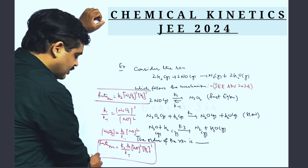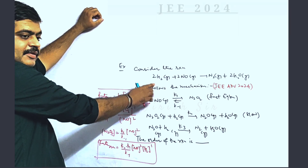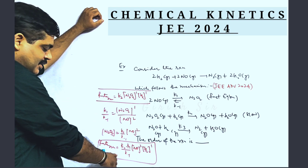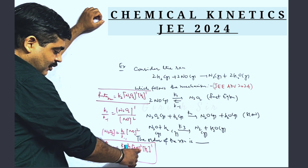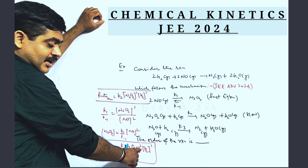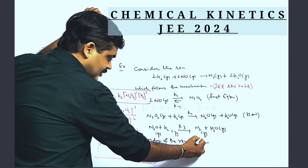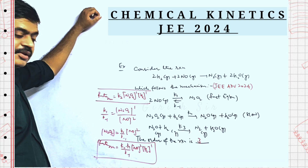This is the rate law for the given reaction having this three-step mechanism. From here, the order of the reaction would be 2 plus 1, so the order of the reaction is 3. Thank you.